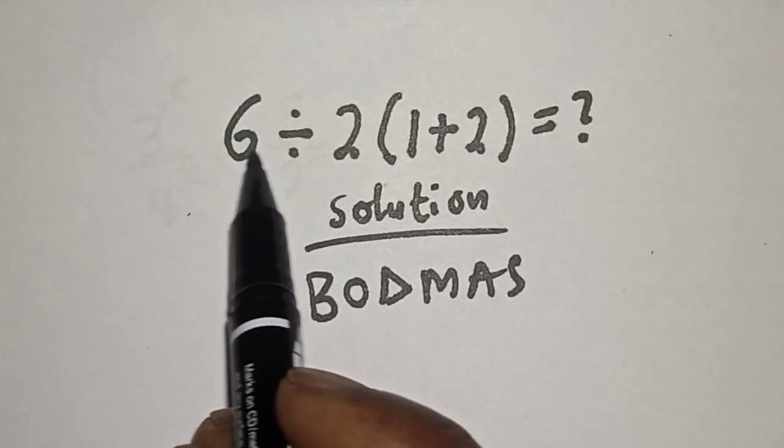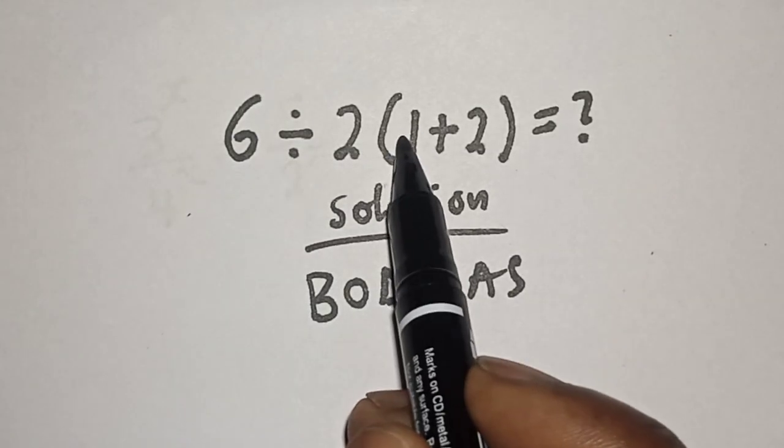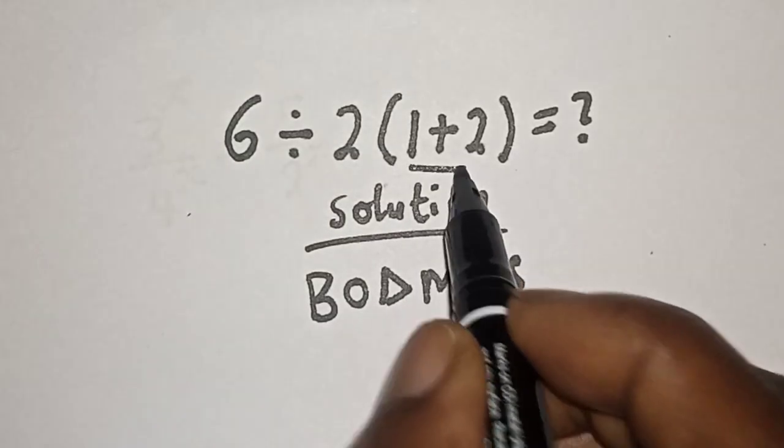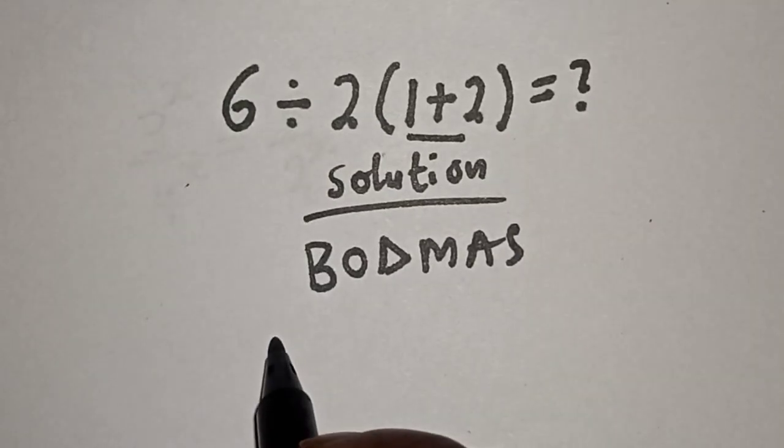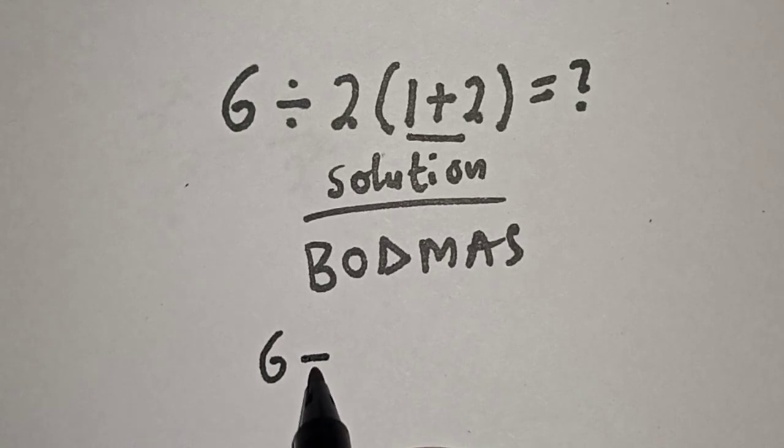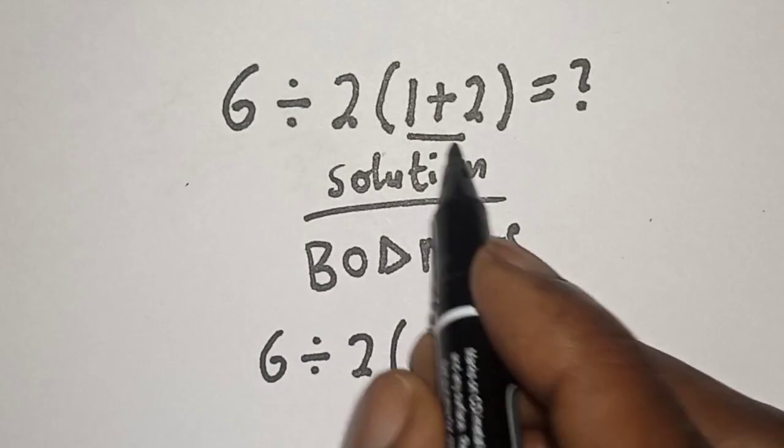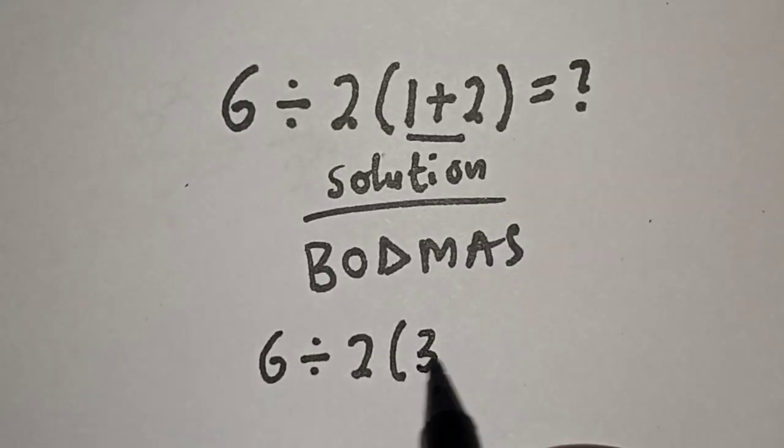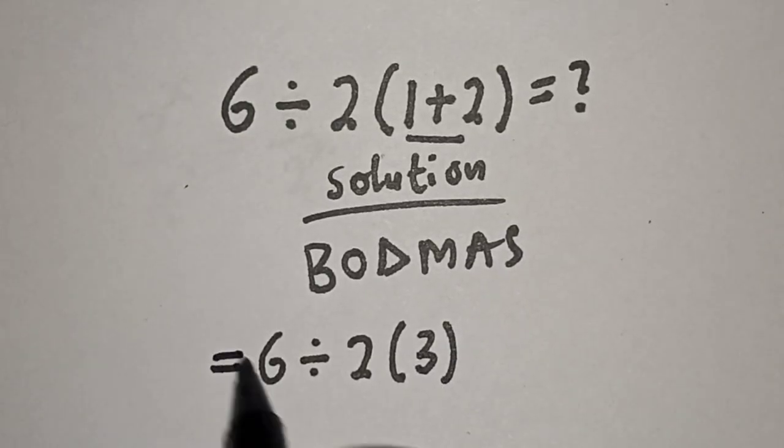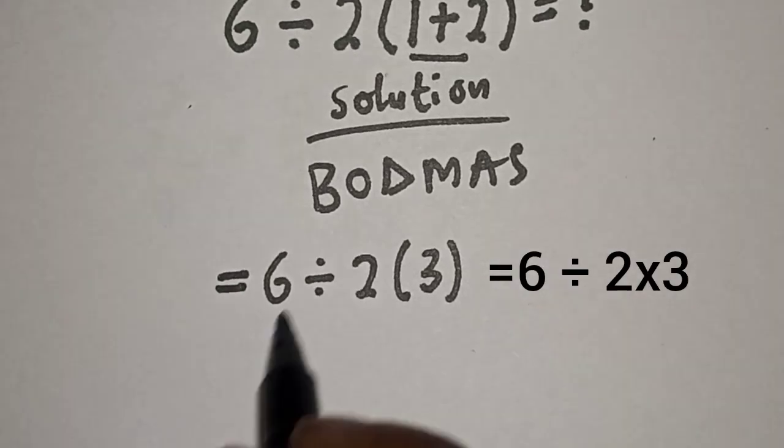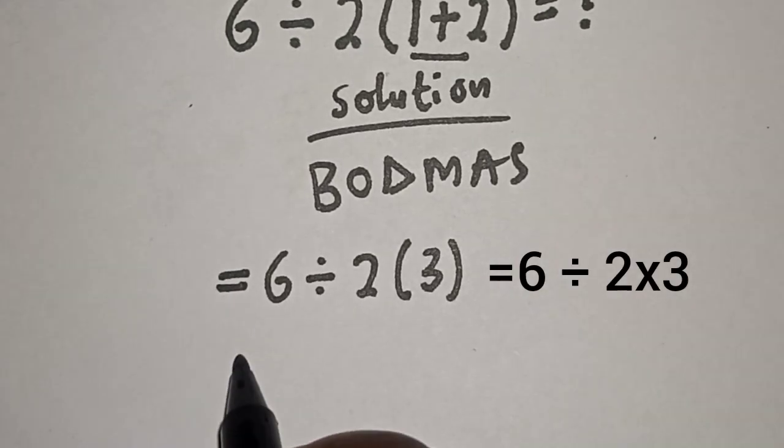We have 6 divided by 2 bracket 1 plus 2. Now let's work with this first. We have 6 divided by 2 bracket 1 plus 2. The rule. Now the next thing is we have the division here.